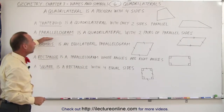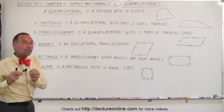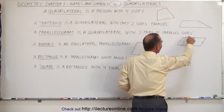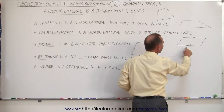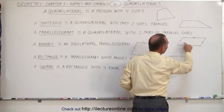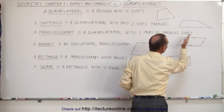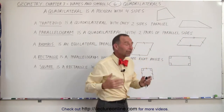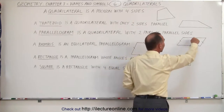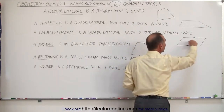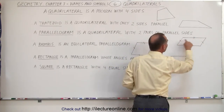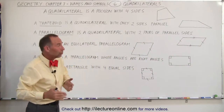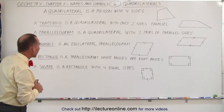A parallelogram is a quadrilateral that has two pairs of parallel sides. Notice that the top side and the bottom side are parallel to one another, and they are equal in length, and the two sides over here are also parallel to one another and equal in length. The two sides that are parallel must be equal in length; otherwise, you cannot have a parallelogram.